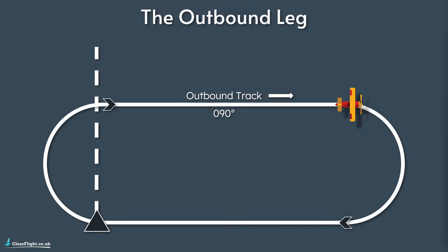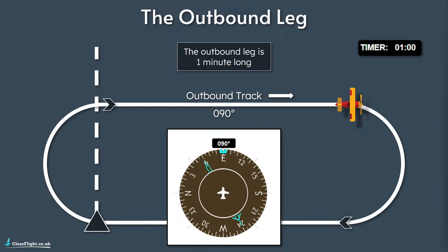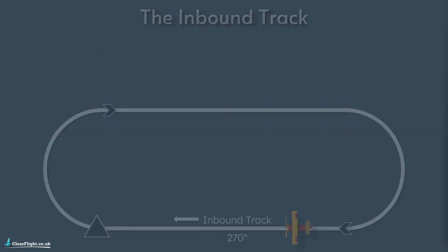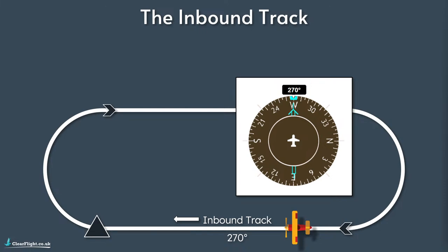From there, we fly the outbound leg - in this case an outbound track of 090 degrees, the reciprocal of the inbound track. In a standard hold we fly this for one minute. At the end of the one minute, the bearing pointer should be pointing back over your right shoulder. The next turn is the inbound turn - again a rate-one level turn. If you've flown it all perfectly, you should finish this inbound turn nicely back on the inbound track of 270 degrees back to the holding fix.